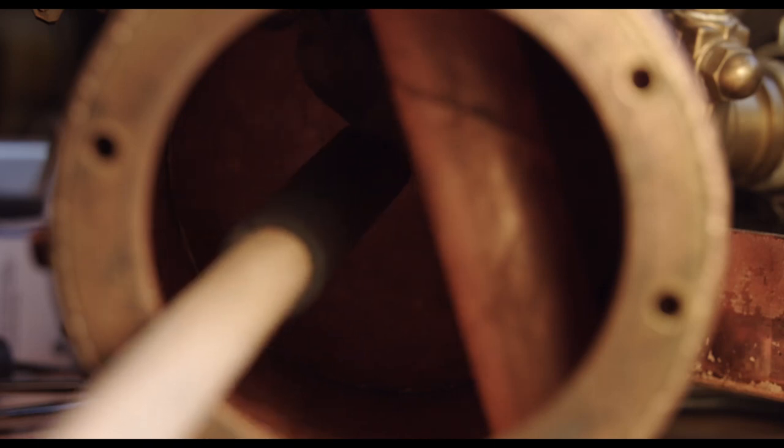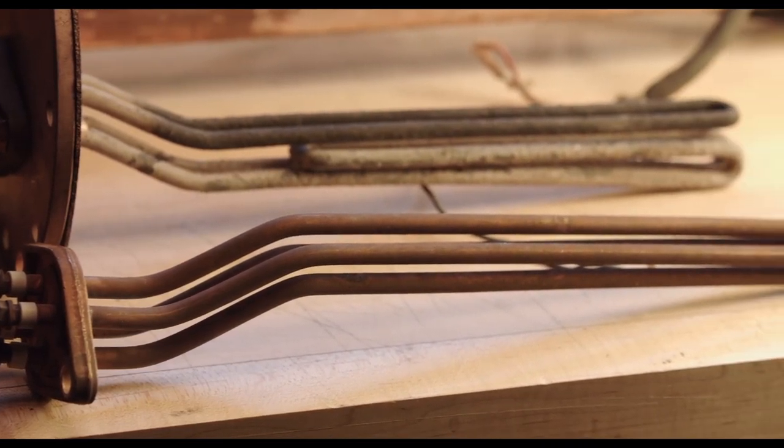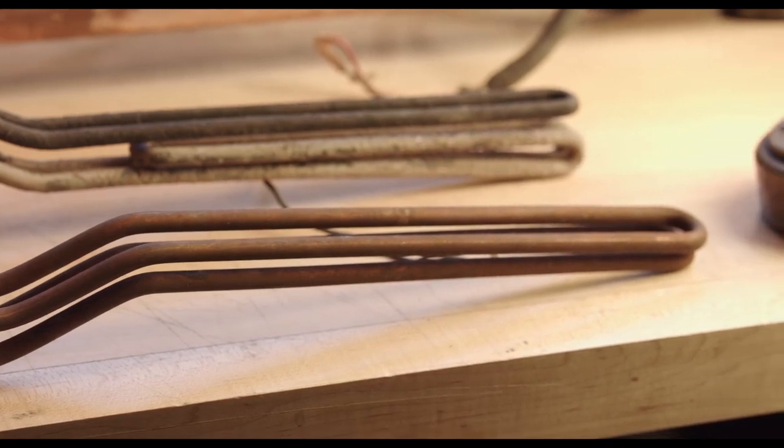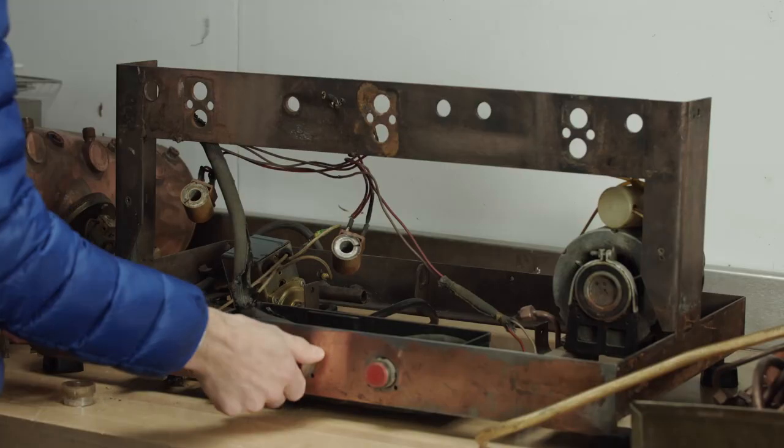And this is how the float switch works. You see that float in there? You just lift it up and down and it triggers the switch. So here I've got the heating element from this machine and another one I had kicking around. And you can see the one from this machine is pretty bad.